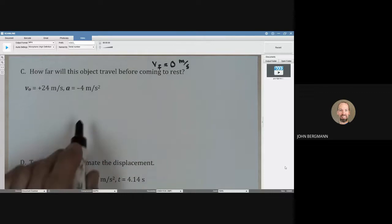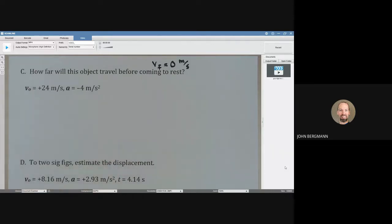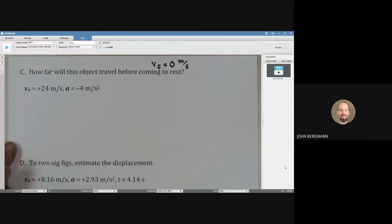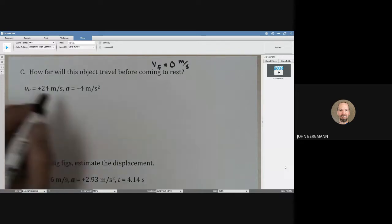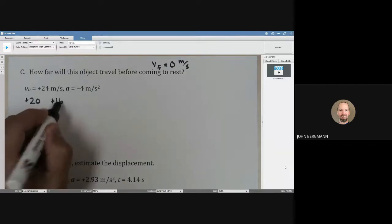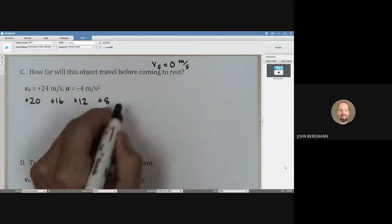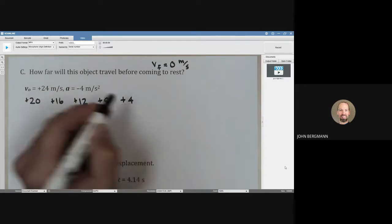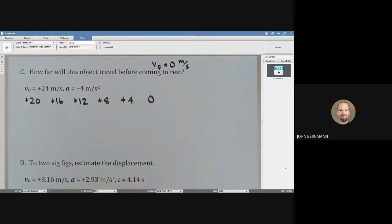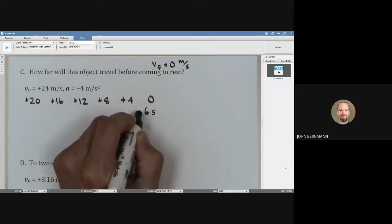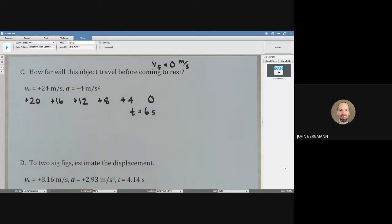Let's start by figuring out how much time is going to elapse. You could probably do this quickly in your head, but let's scribble out some numbers so you can see the logic. After one second, this object will be moving at positive 20 meters per second. After two seconds, positive 16. Three seconds, positive 12. Four seconds, positive 8. Five seconds, positive 4. Six seconds - that's how long it's going to take to come to rest.